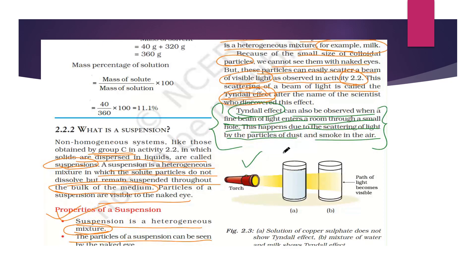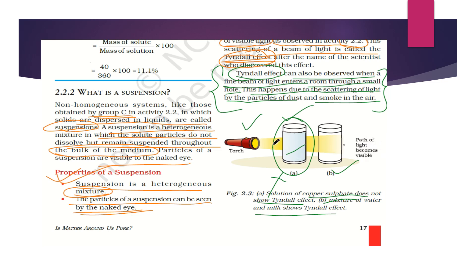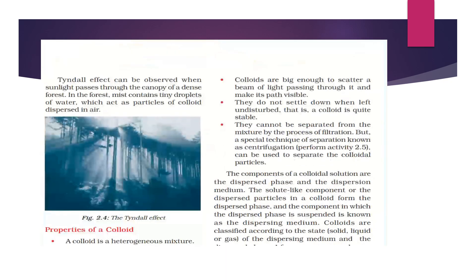For example, a solution of copper sulfate does not show the Tyndall Effect, but a mixture of milk and water does show the Tyndall Effect. When you pass a torch light through both, the path of light becomes visible in the milk and water mixture — that is the colloidal solution — whereas it is not visible in the copper sulfate solution. So the Tyndall Effect is possible in a colloidal solution.